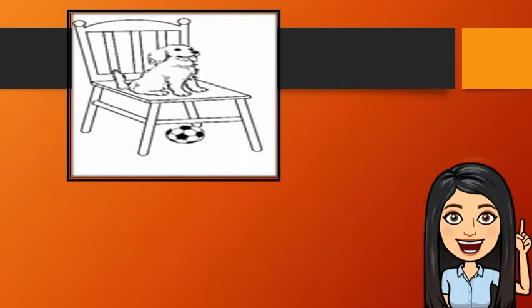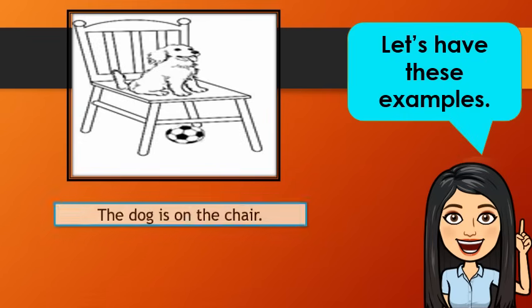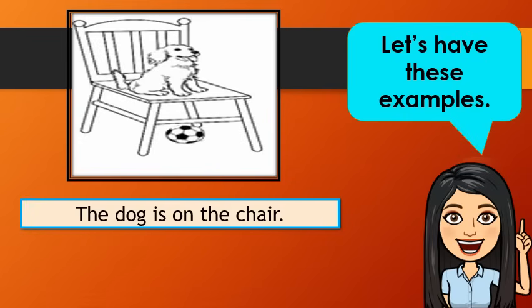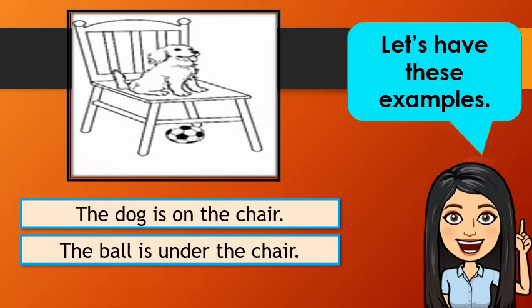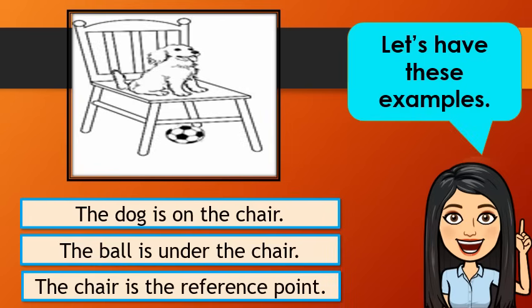How about in this picture? Can you locate the position of the dog? Very good. The dog is on the chair. How about the ball? Correct. The ball is under the chair. What do you think is the reference point? Very good. The chair is the reference point.